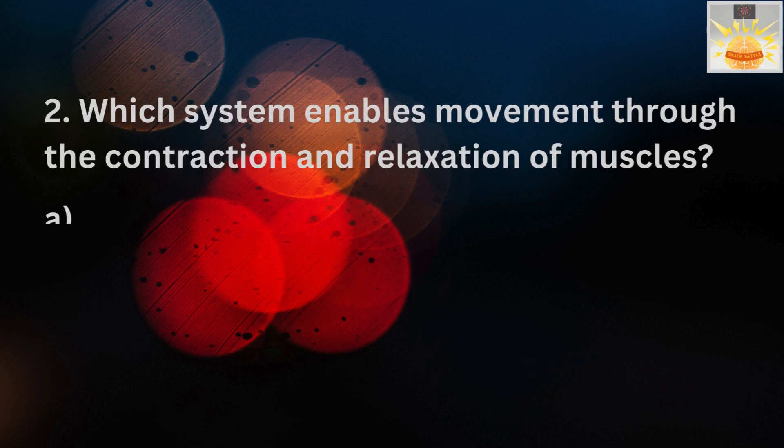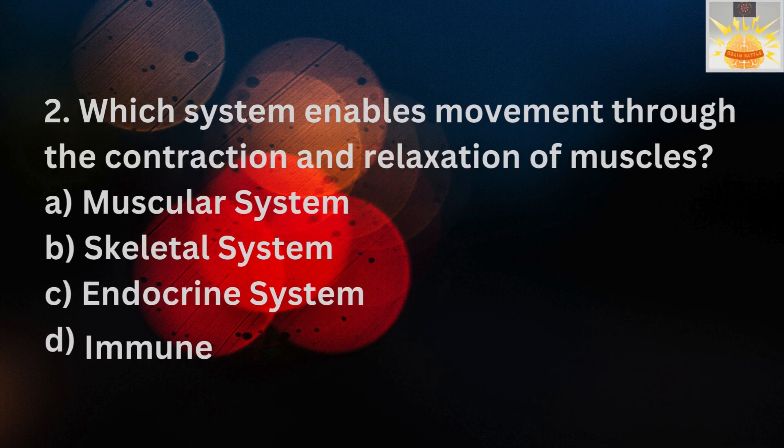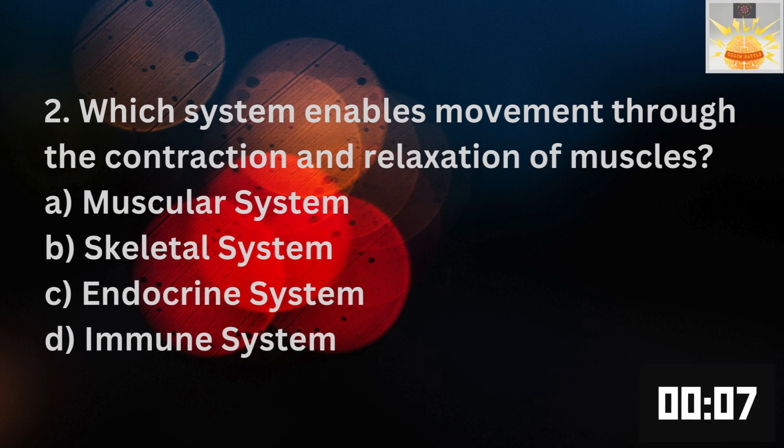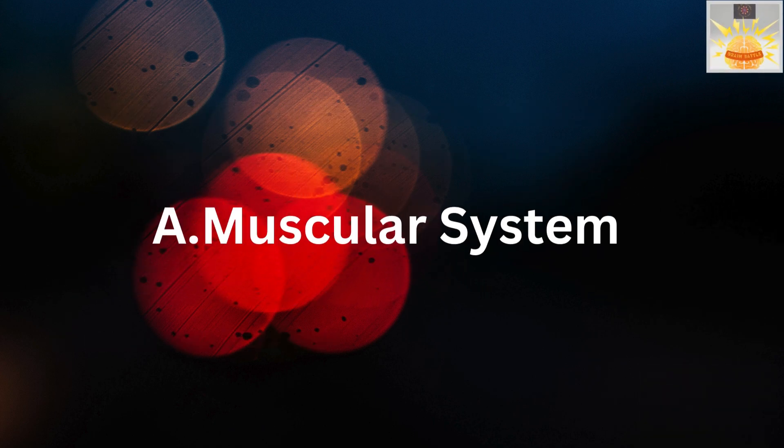Which system enables movement through the contraction and relaxation of muscles? A. Muscular system. B. Skeletal system. C. Endocrine system. D. Immune system. The answer is A. Muscular system.